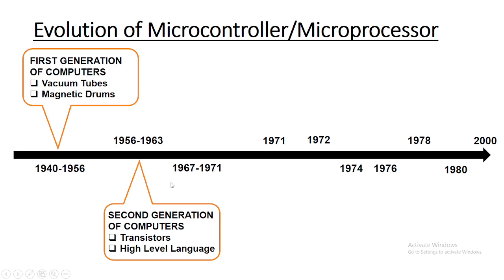In the second generation, the transistor replaced the vacuum tubes. The transistor was invented at Bell Labs in 1947, but did not see widespread use in computers until the late 1950s. From 1956 onwards, transistors were used as the primary component in computers. The advantages of transistors over vacuum tubes were significant: they allowed computers to become smaller, faster, cheaper, more energy efficient, and more reliable than first generation computers.